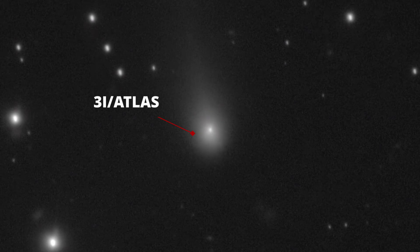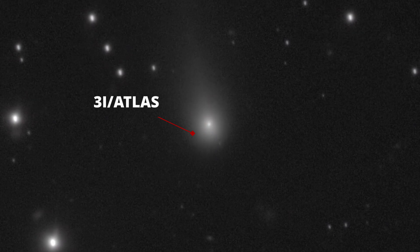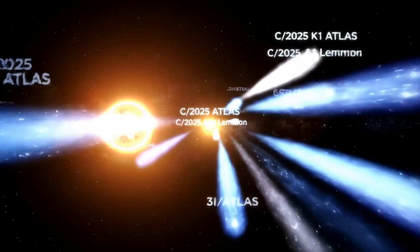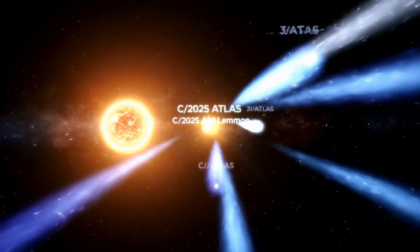If we can decode 3i Atlas, we shift from story to data. If its isotopes and dust match known comets, the 2025 Swarm is likely a rare but natural convergence.